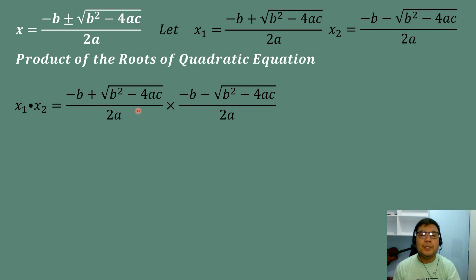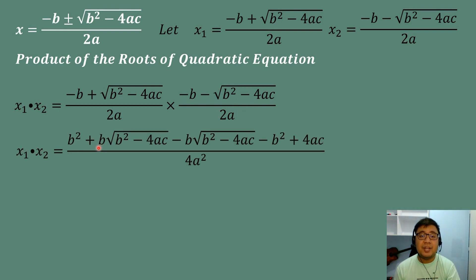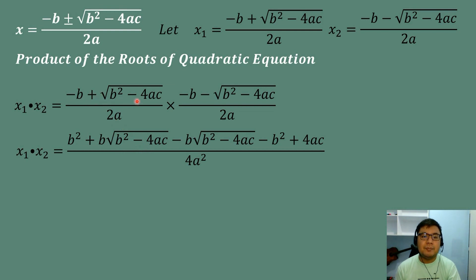So, we have negative B plus square root of B squared minus 4AC all over 2A, times negative B minus square root of B squared minus 4AC all over 2A. Then, we will simplify using the distributive property. Negative B times negative B is equal to B squared. Negative B times negative square root of B squared minus 4AC is equal to positive B times square root of B squared minus 4AC. Then, positive square root of B squared minus 4AC times negative B is negative B times square root of B squared minus 4AC.